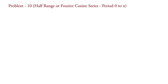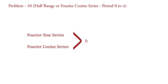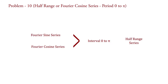Problem on half-range series. Fourier sine series and Fourier cosine series are the series for interval 0 to pi, instead of minus pi to pi. So they are known as half-range series. We will take a problem on such type of half-range series.